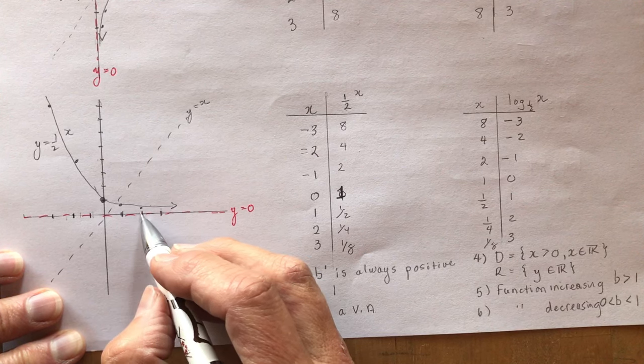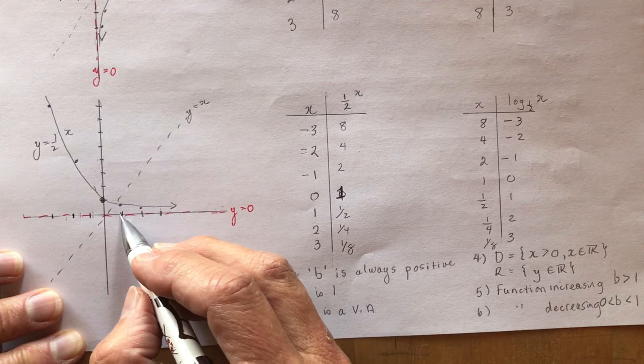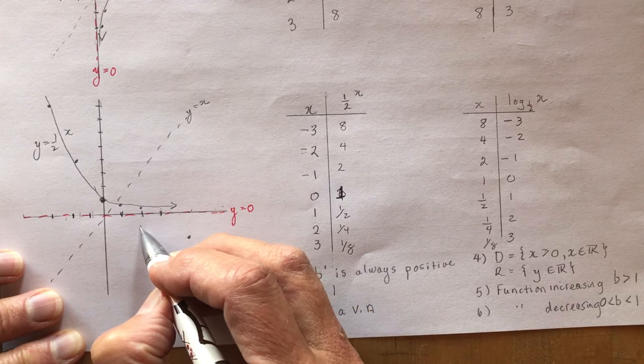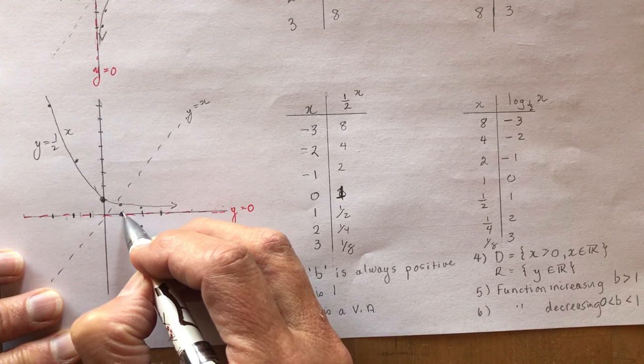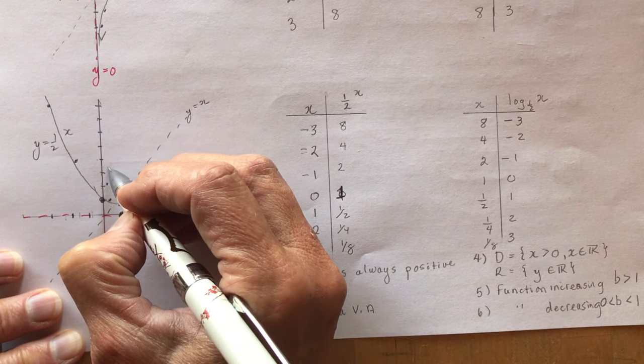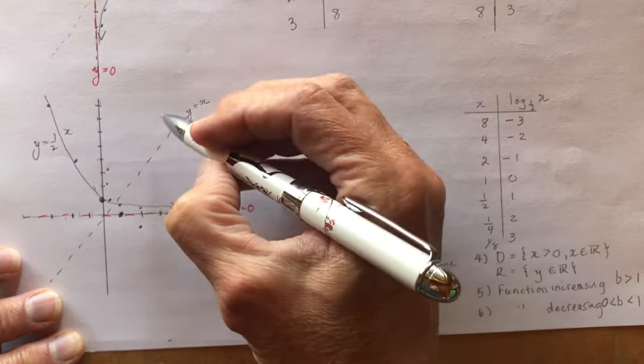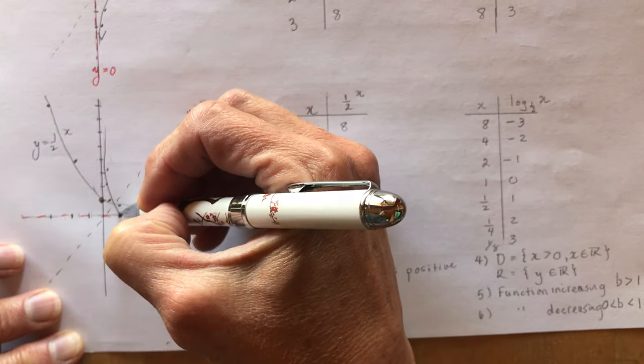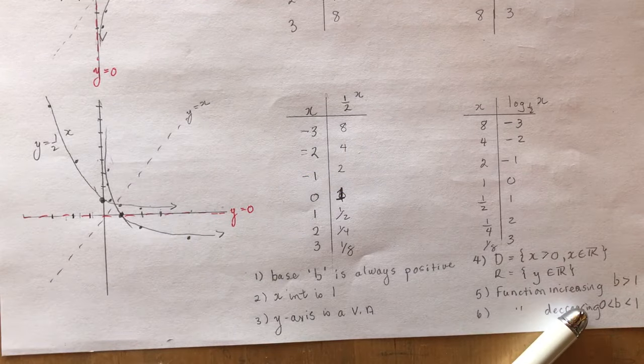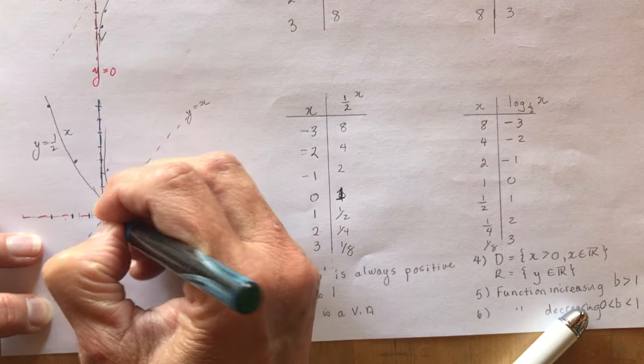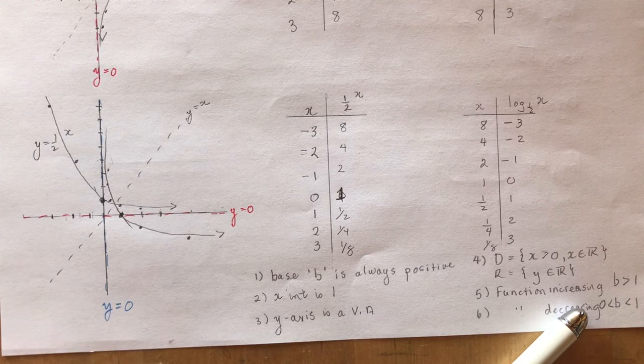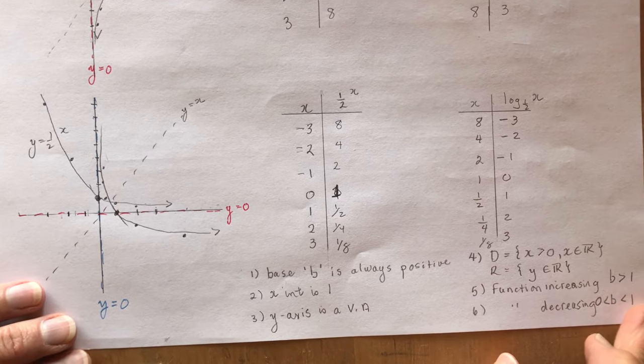Let's put this on here quickly. We have 8 and -3, 4 and -2, 2 and -1, 1 and 0, 1/2 and 1, 1/4 and 2, 1/8 and 3. So it's coming down like this. And again, this is the asymptote for the logarithmic function, y equals 0. So that's what they look like. It's not really that difficult to figure those out.